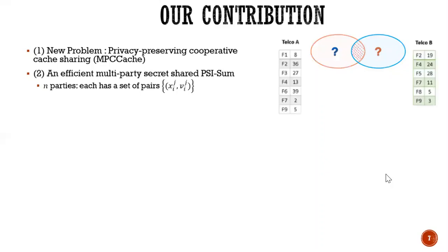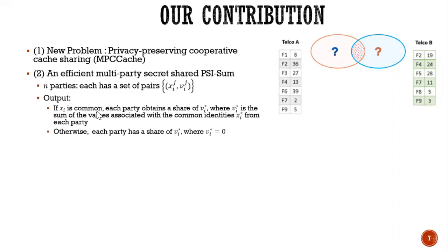Second one is that we propose an efficient multi-party secret shared PSIC, where each party have the set of pairs and the output is that if all the XIs, if the XIs is common, then each party obtains a share of VI star. Again, where VI star is the sum of all values associated with the common XI star. And otherwise, each party has the share of 0.